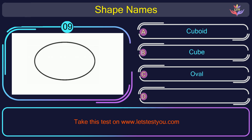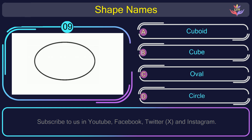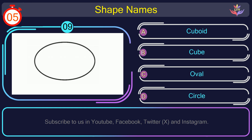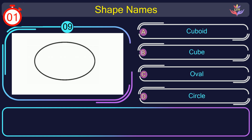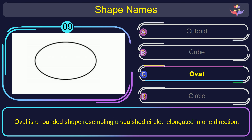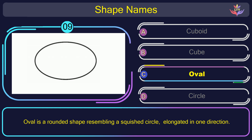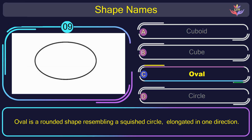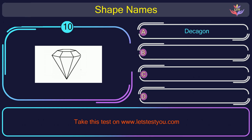Question number 9. What is the name of the shape in this picture? The correct answer is option C. Oval. Oval is a rounded shape resembling a squished circle, elongated in one direction.